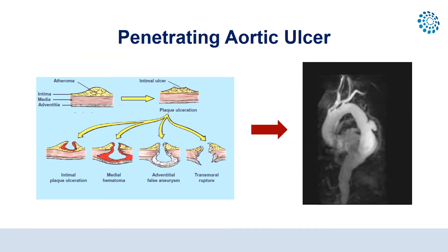Penetrating aortic ulcer is the third entity, defined as the ulceration of an aortic atherosclerotic plaque penetrating through the internal elastic lamina into the media. Penetrating aortic ulcer also carries a risk of aortic rupture.